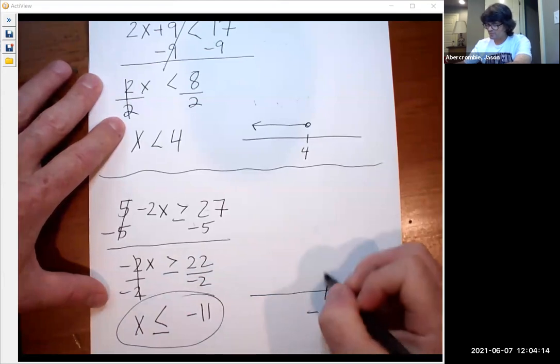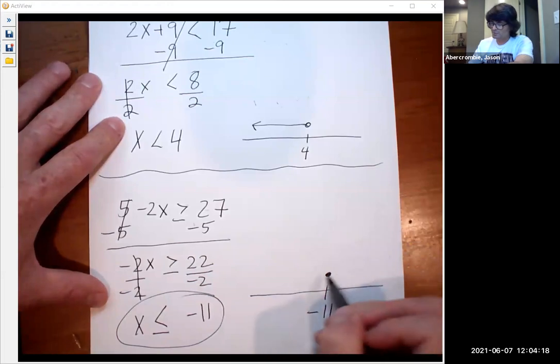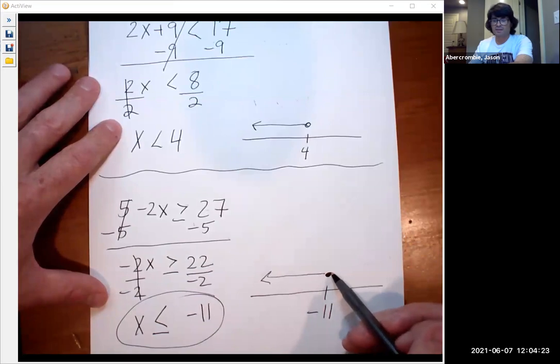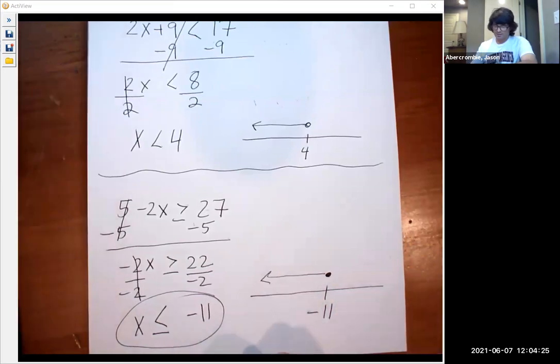Put that on the number line. Use a solid dot because it's a less than or equal to. The or equal part means we have a solid dot. We start with the number negative 11 and go down just like that.